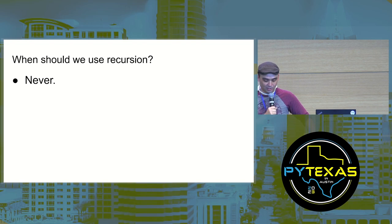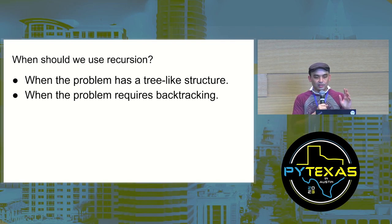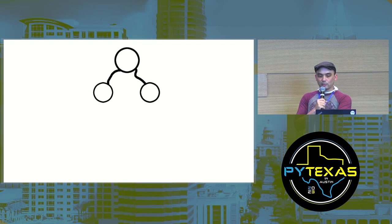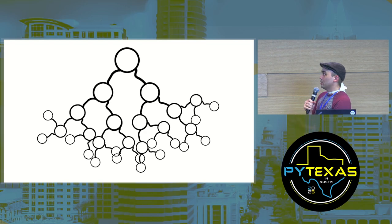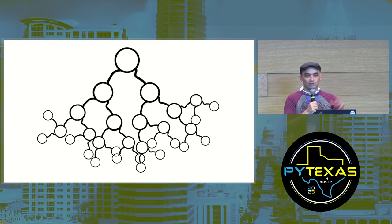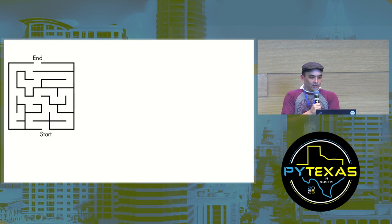We should use recursion when your problem has both a tree-like structure and backtracking. A tree data structure has a root node at the top that branches out to other nodes, which branch out further. Trees have a recursive structure. Recursion is really suited to working with tree graphs because of their recursive nature — especially when you need to move down the tree but then also backtrack up.